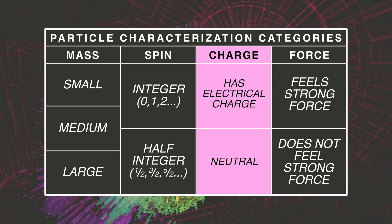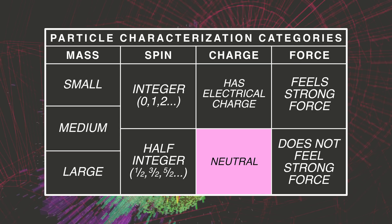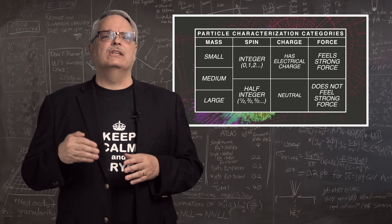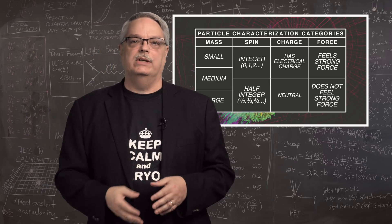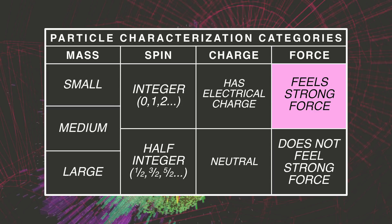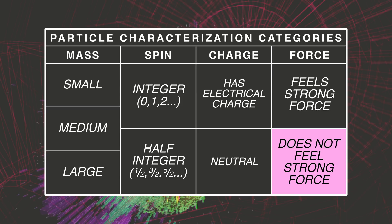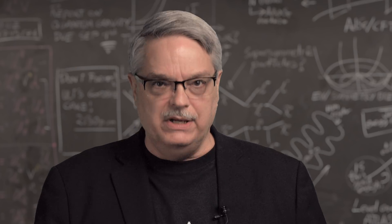Then there's electrical charge, with particles having either electrical charge or being neutral. It turns out that there isn't a special word distinguishing between the two, which is weird, but that's the way it is. And then one can classify the particles as feeling the strong force or not. This was also historically important. So those are the biggies. Now let's dig into the names.